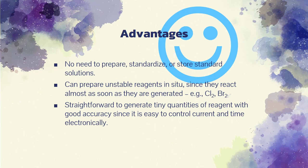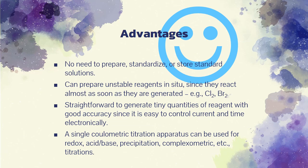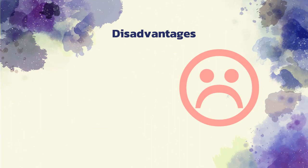Coulometric methods also excel when small amounts of analyte have to be titrated, because tiny quantities of reagent are generated with ease and accuracy through the proper choice of current. With conventional titrations, it is inconvenient and often inaccurate to use very dilute solutions and small volumes. A further advantage of the coulometric procedure is that a single constant current source provides reagents for precipitation, complex formation, neutralization, or oxidation reduction titrations.